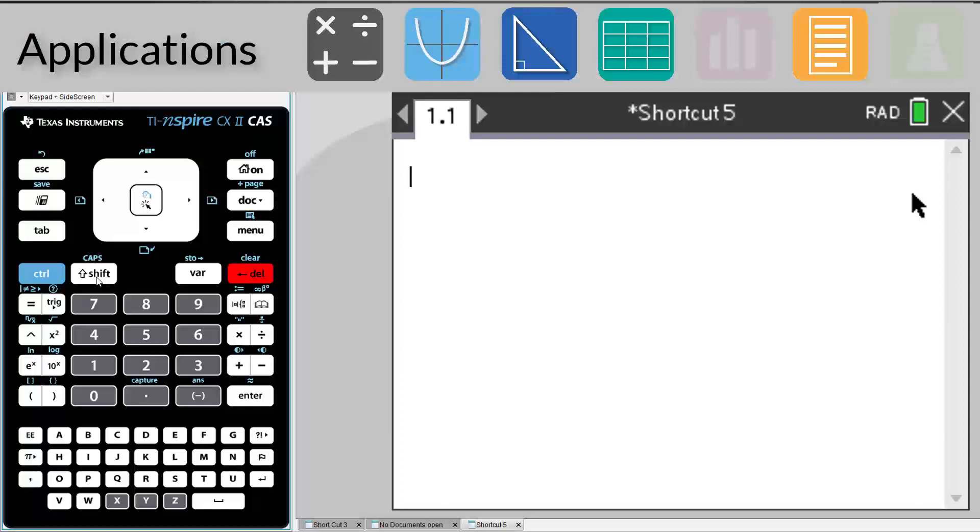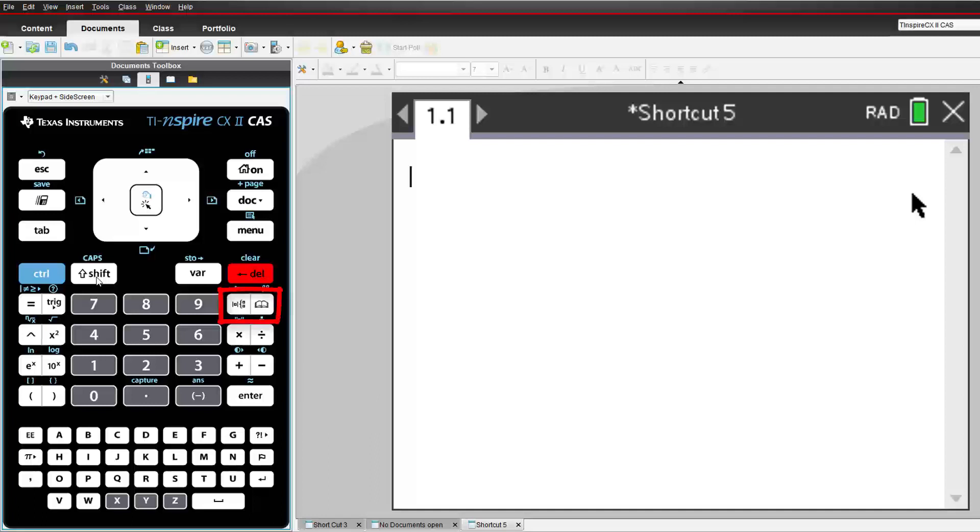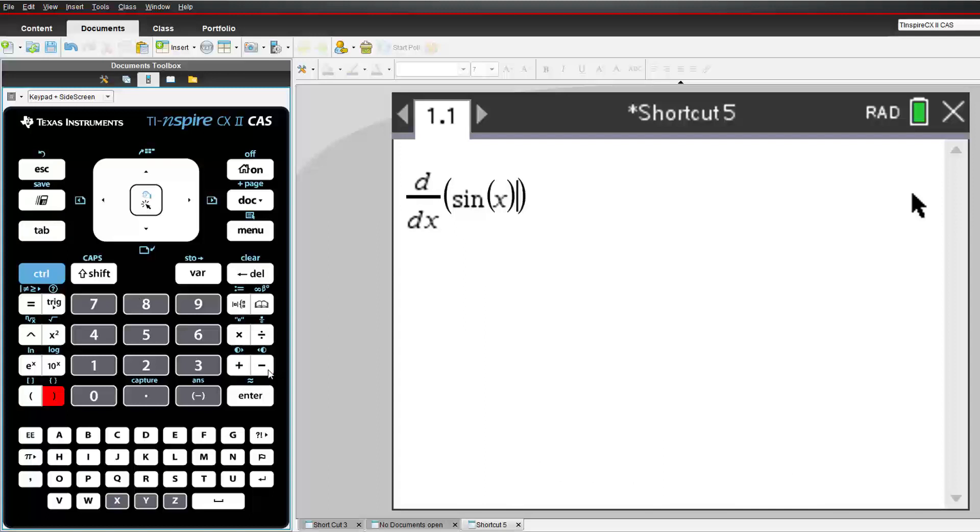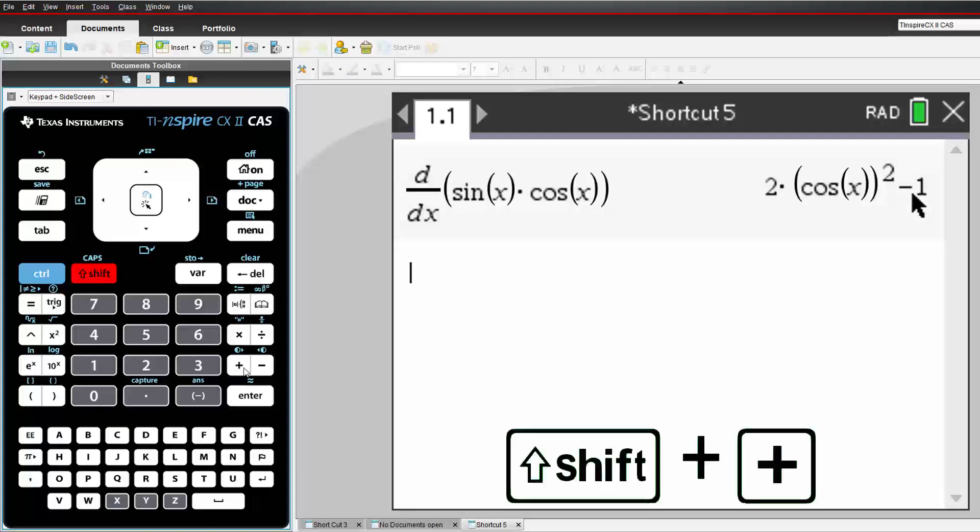You can access a whole page of mathematics templates using the button adjacent to the catalogue. Some of these templates have shortcuts. If you want to calculate the derivative of an expression, press SHIFT and MINUS. To help remember this shortcut, think about what happens to the exponents of a polynomial when it is differentiated. So what happens if you press SHIFT and PLUS?